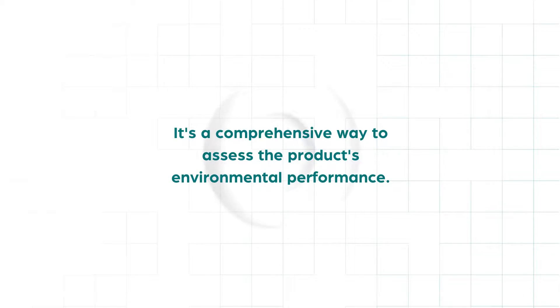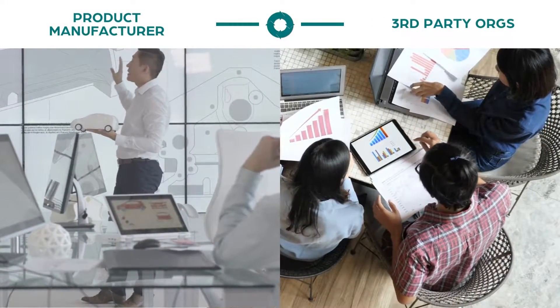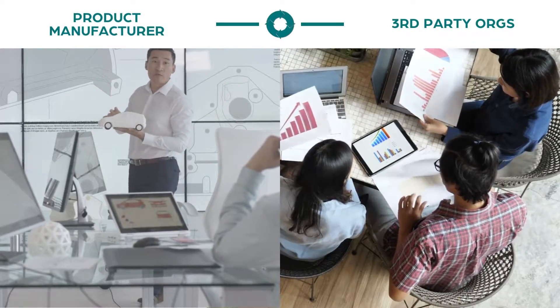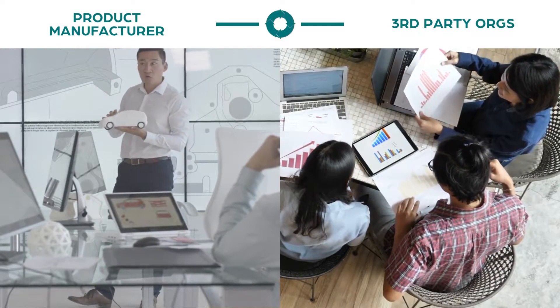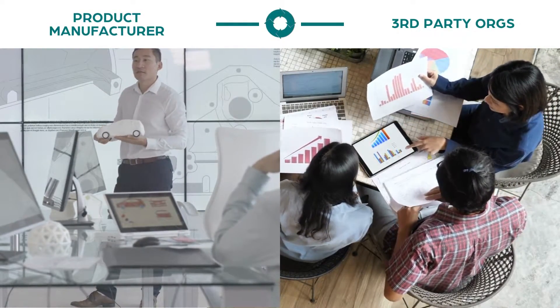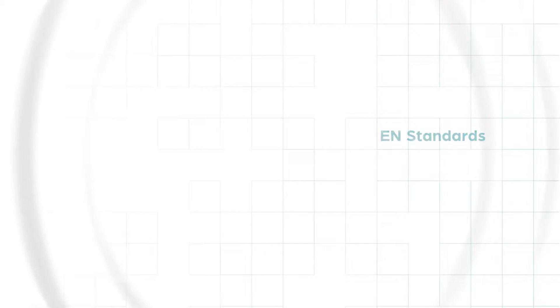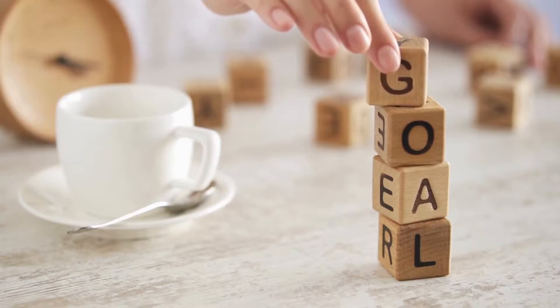It's a comprehensive way to assess the product's environmental performance. EPDs are typically developed by the product manufacturer or sometimes by independent third-party organizations. They follow international standards and guidelines such as ISO 14025 and EN 15804 to ensure credibility and consistency.